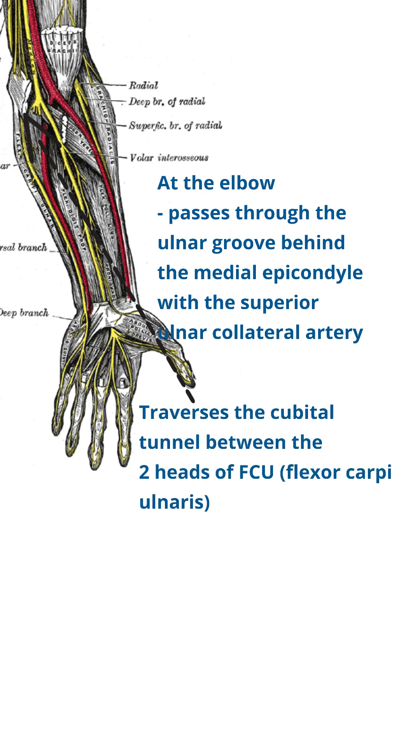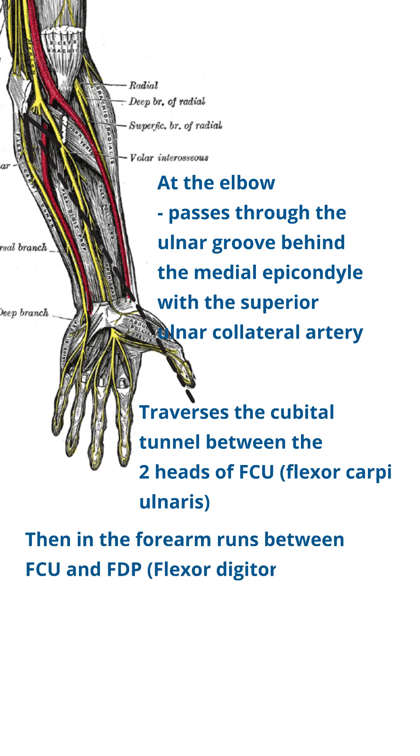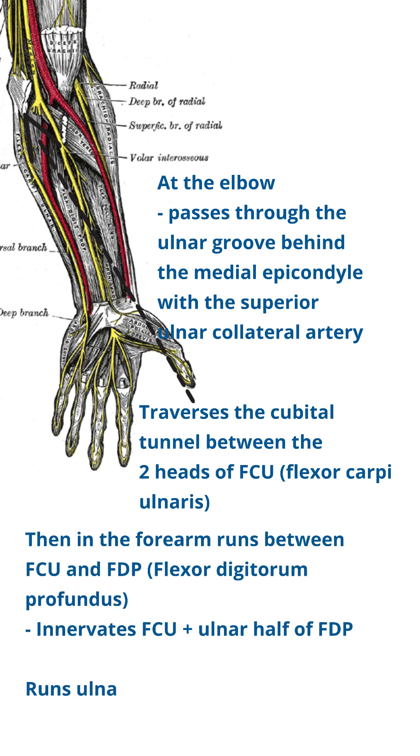In the forearm, the ulnar nerve runs between FCU and FDP, innervating FCU and the ulnar half of FDP.